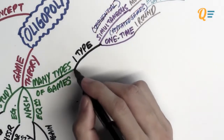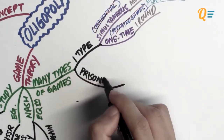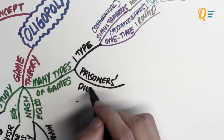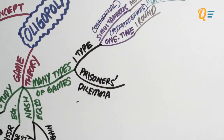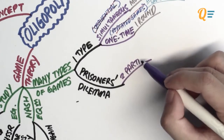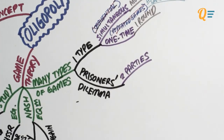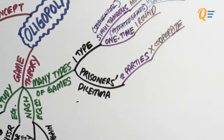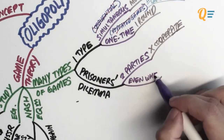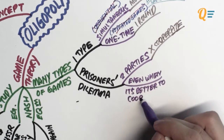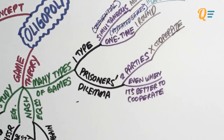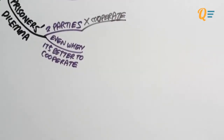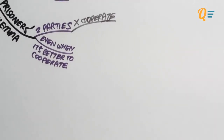The result of this particular game is the Prisoner's Dilemma. The Prisoner's Dilemma is not a type of game — it is a result of a certain game. It is basically the case where two parties do not cooperate with each other even when it's better to cooperate. To explain this, we're going to spend some time doing some storytelling.